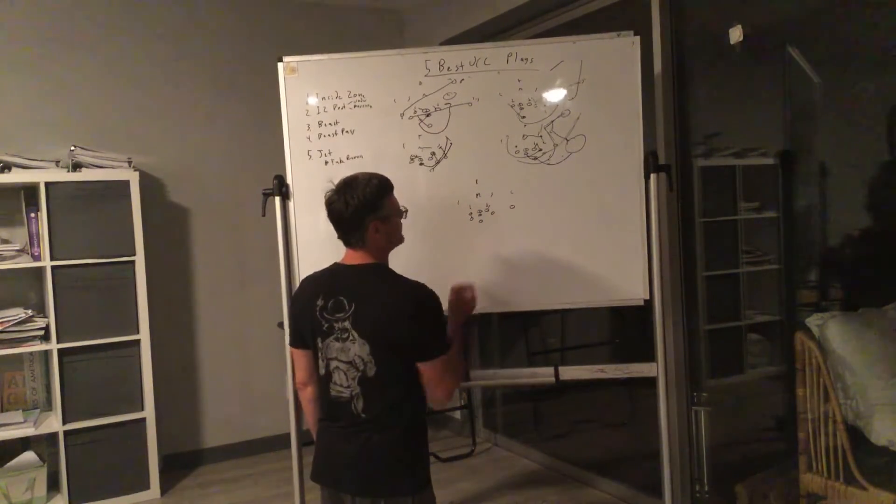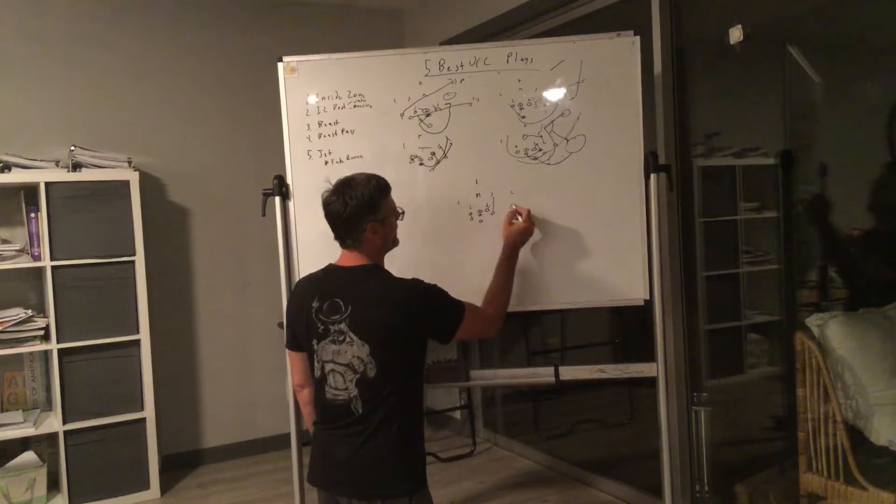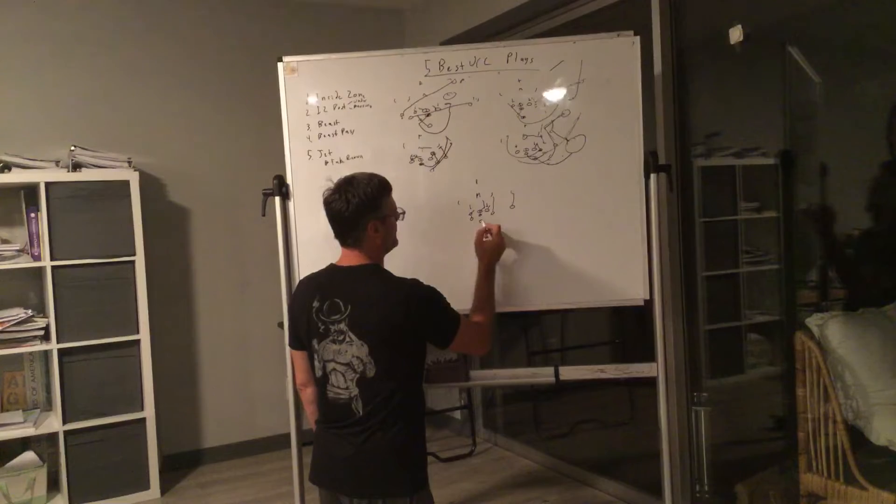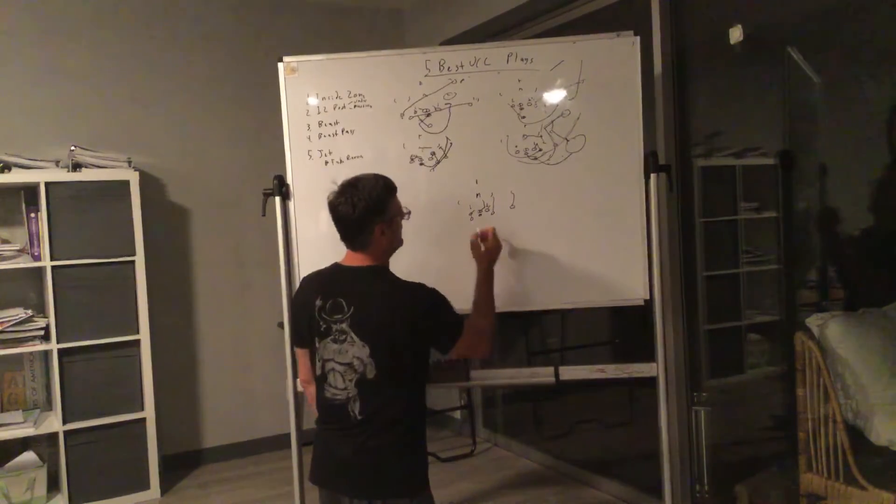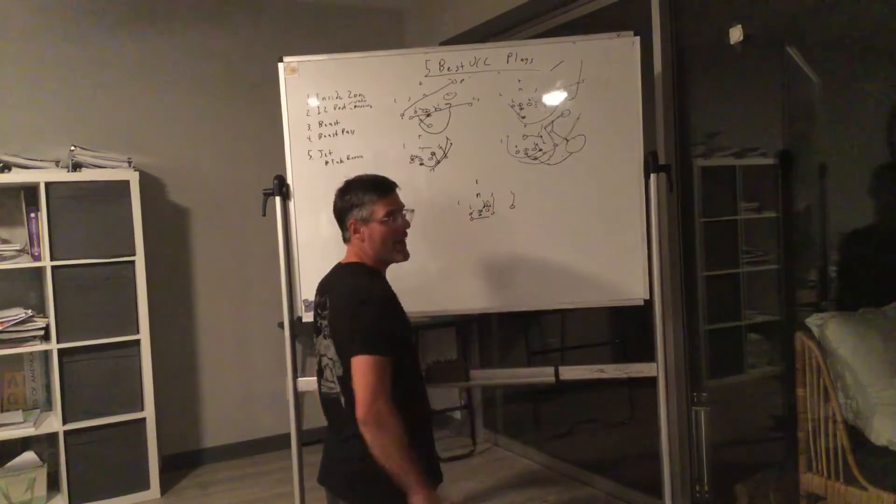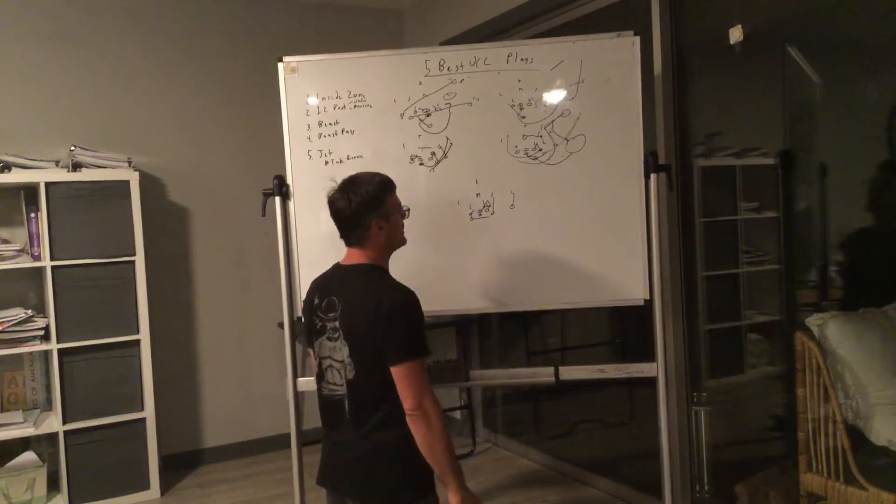And do it just like inside zone, right? Boom, everything's going to be the same. He's got the front side A gap. Too many guys here. He's just going to go. It's almost like a horizontal dive. And it's just like he's reading the same action key. It's the same thing as inside zone, except it's horizontal.